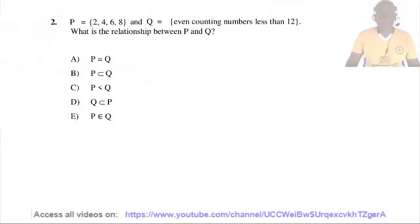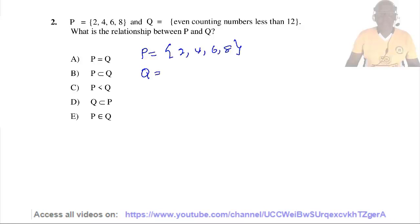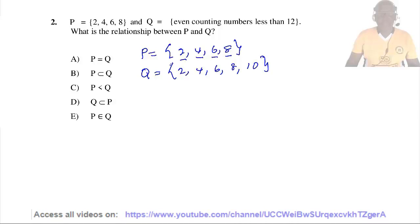Question 2. Set P equals {2, 4, 6, 8} and Set Q equals even counting numbers less than 12, that is {2, 4, 6, 8, 10}. The elements 2, 4, 6, and 8 in P can all be found in Q, so P is a subset of Q.